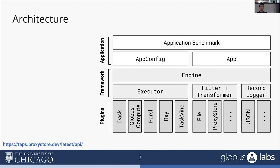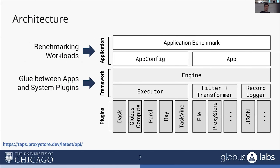We've designed TAPS into three layers. At the top, we have our application layer — these are our benchmarking workloads. We provide a set of applications to use as workloads, or you can add your own. In the middle, we have the framework layer, which provides the engine interface — the glue between the applications and the system plugins we're actually benchmarking. At the bottom, we have the plugin layer: the things you actually want to benchmark, such as Dask, Globus Compute, or Parsl as a task execution plugin, or ProxyStore as a data management plugin.